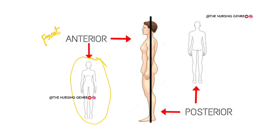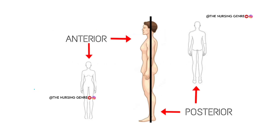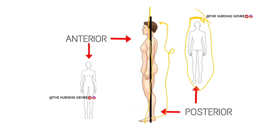Whereas posterior is defined as the back or toward the back of the body. If we look at the picture, we look at the back of the person. So the body is divided as anterior and posterior. If we look at this side, we look at the posterior — the back of the body. The front portion is the anterior.